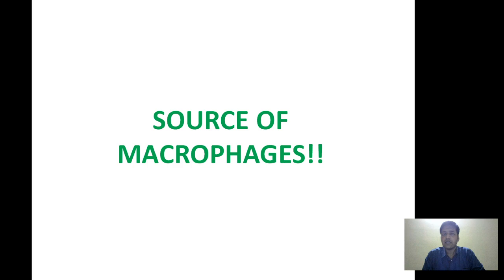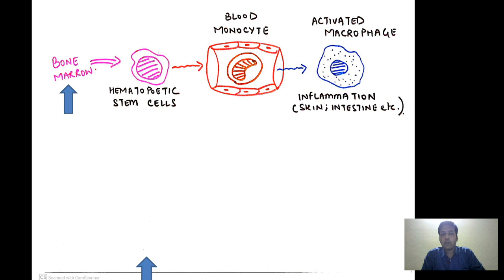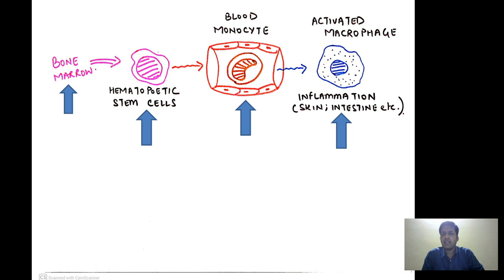Moving ahead, what is the source of macrophages? The number one source is the bone marrow, which gives rise to hematopoietic stem cells, and from those arise blood monocytes. These blood monocytes go into tissues — for example the skin or intestine — when there is some inflammation. Such blood monocytes when they enter the tissue are called activated macrophages. Always remember: macrophages present in the blood are called monocytes, whereas those present inside tissues are called macrophages.